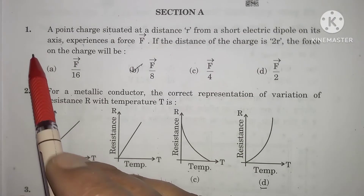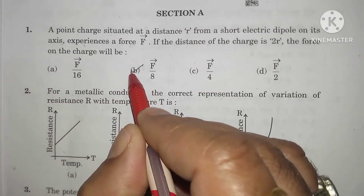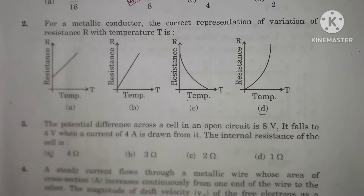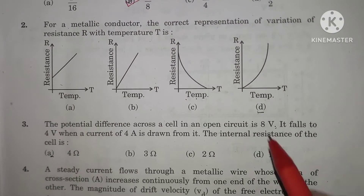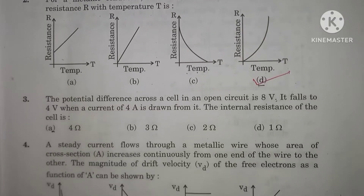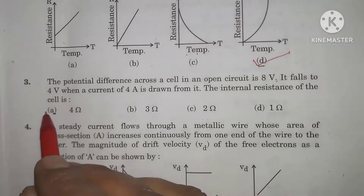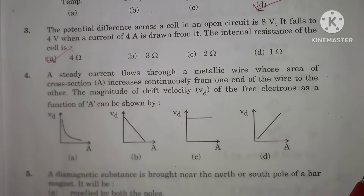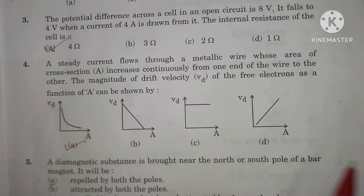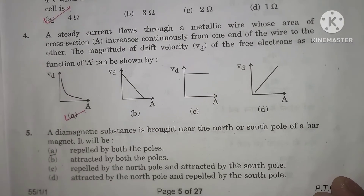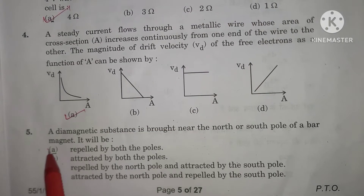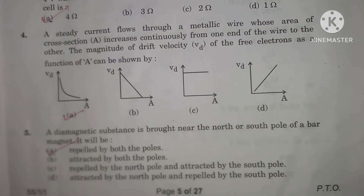Question number 1: option B is the correct option. In question number 2, option D is the correct option. In question number 3, option A is the correct option. Question number 4, option A is the correct option. In question number 5, option A is the correct option.